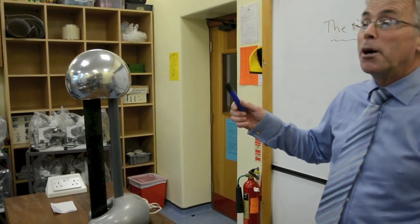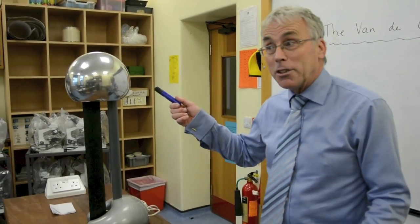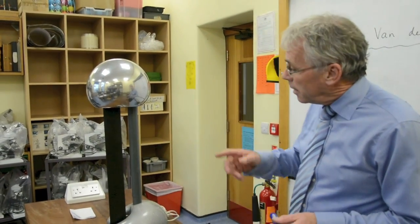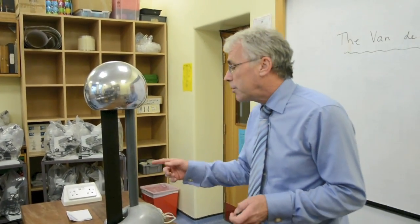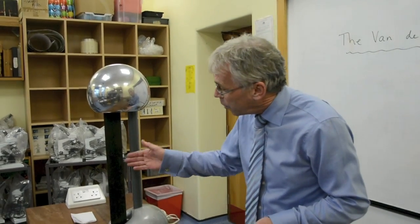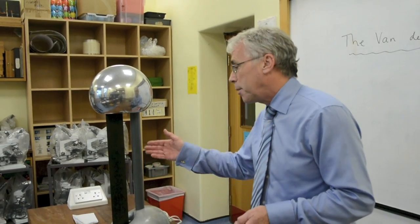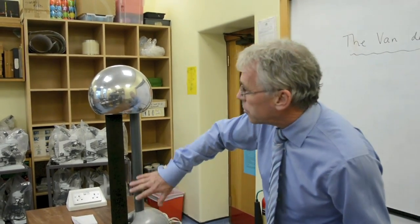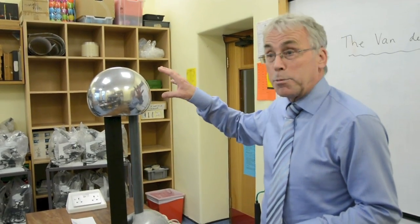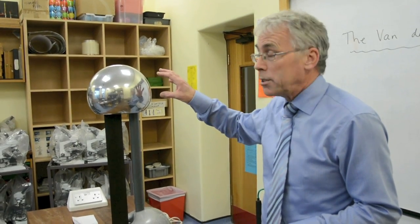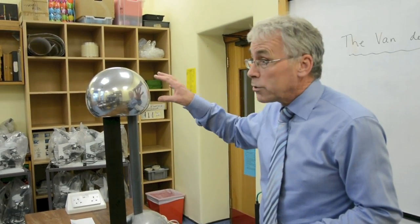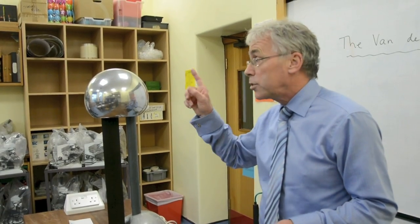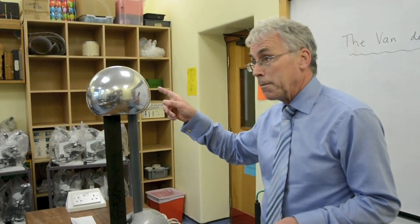Today's lesson is about the Van de Graaff generator. Electrons are generated by the friction on the non-conducting parts here. The electrons travel up to the sphere which becomes charged — loads of charge up here — so one thing you must be really sure of is not touching the sphere.